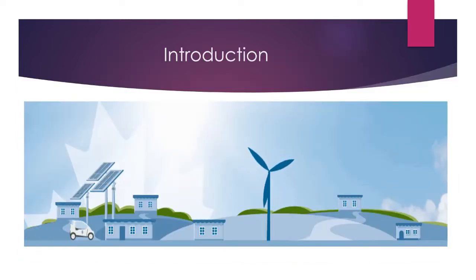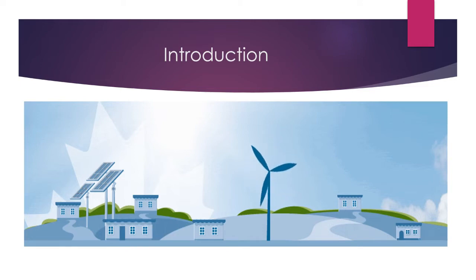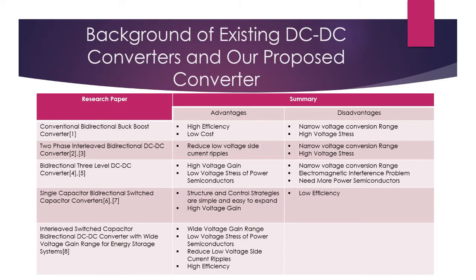Due to the energy crisis, the present and future world demands high efficiency and effective extraction of renewable energy. In that scenario, DC-to-DC converters play a major role. A bidirectional DC-to-DC converter is a key component for interfacing an energy storage element such as a supercapacitor or a battery pack with a DC bus. Therefore, a bidirectional DC-to-DC converter with a wide voltage gain range is desired for energy storage systems to connect a low voltage battery with a high voltage DC bus.